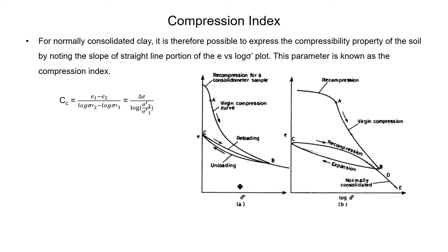The compressibility property of the soil can be defined by the compression index. The compression index is the slope of the straight line portion of the e versus log sigma dash graph. When we plot void ratio versus effective stress on a semi-logarithmic scale, there will be a straight line portion whose slope indicates the compression index, denoted by CC.